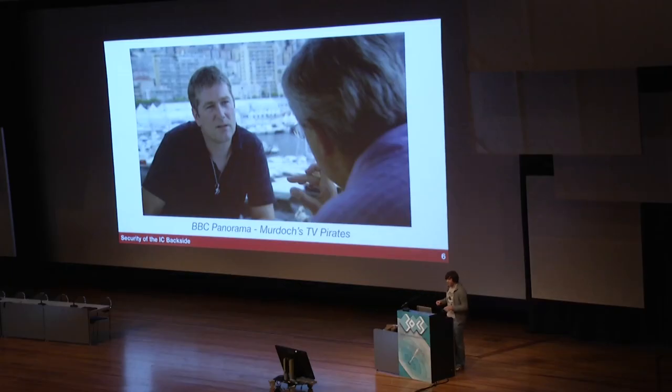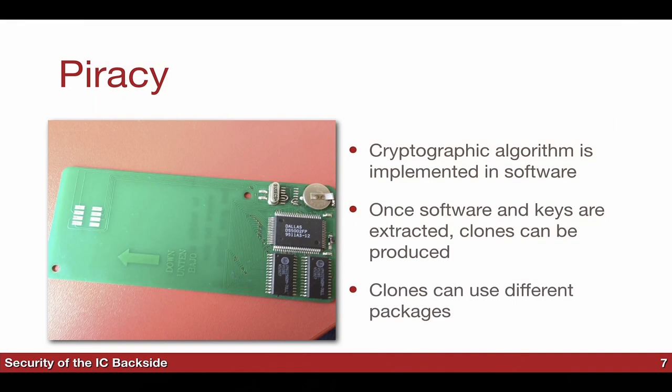So you get the idea. What happens is you extract the software from a smart card, and then you can build something like this — one of the original pirate cards. Once they extracted the software, they knew how the cryptographic algorithm worked, and now they could grab a different microcontroller, make a PCB that fits into a pay TV receiver, stick the card in, and now you didn't pay anything but you have all the channels.